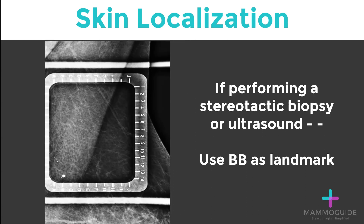If you're performing a stereotactic biopsy and you're having a hard time identifying the calcifications or finding them within your little window, you can also perform a skin localization. Or, if you see a subtle finding on the mammogram and you can't find it on ultrasound, you can also perform a skin localization to aid in identification. Simply use the BB that you placed under the alphanumeric grid as a landmark — place this within the stereotactic biopsy window, or use it as a marker to guide where to put your ultrasound probe.